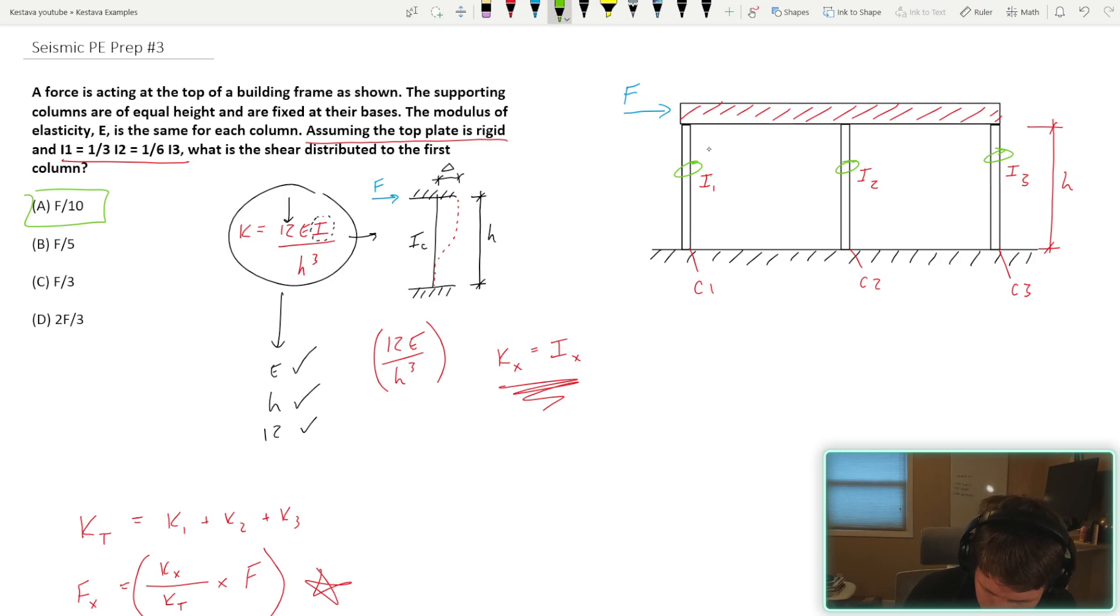So as you come to realize that your column one is three times less stiff than column two and six times less stiff than column three, you are going to realize, hey, not a lot of load is ultimately going to go to that column. So the fraction is going to be fairly small. So from these answers I might say, well, F over three, that's a pretty big amount that would go to that column. That can't be true.